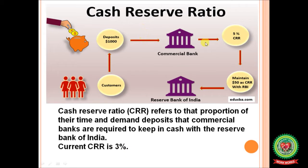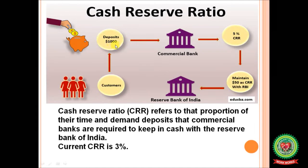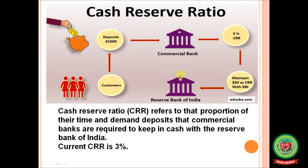According to the 3% CRR, commercial banks deposit 3% of their total deposits with the RBI — so for total deposits of $1000, they deposit $30. Time deposits refer to fixed deposits, while demand deposits include saving accounts and current accounts.